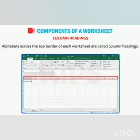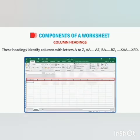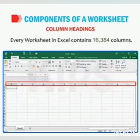Then column headings. These headings identify columns with letters A to Z, AA to AZ, BA to BZ, and XAA to XFD. Every worksheet in Excel contains 16,384 columns.